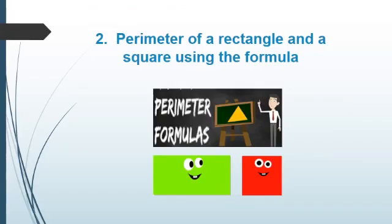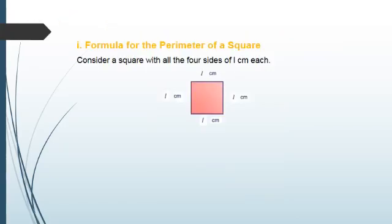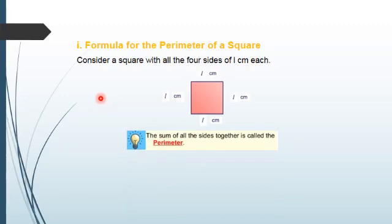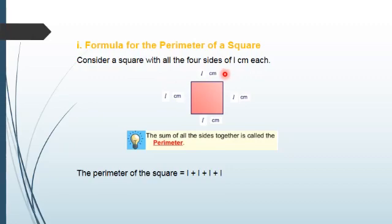The next method to find out the parameter of a rectangle and a square is using a formula. Let's derive the formula for the parameter of a square. We consider a square with all 4 sides of n cm each. We know that the sum of all 4 sides together is called the parameter. So the parameter of this square will be n plus n plus n plus n, which equals 4n. Therefore, the formula for the parameter of a square is 4n.